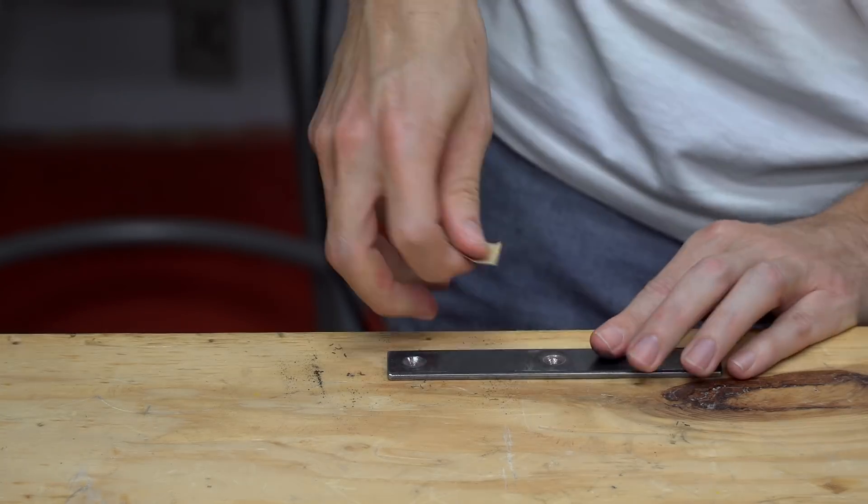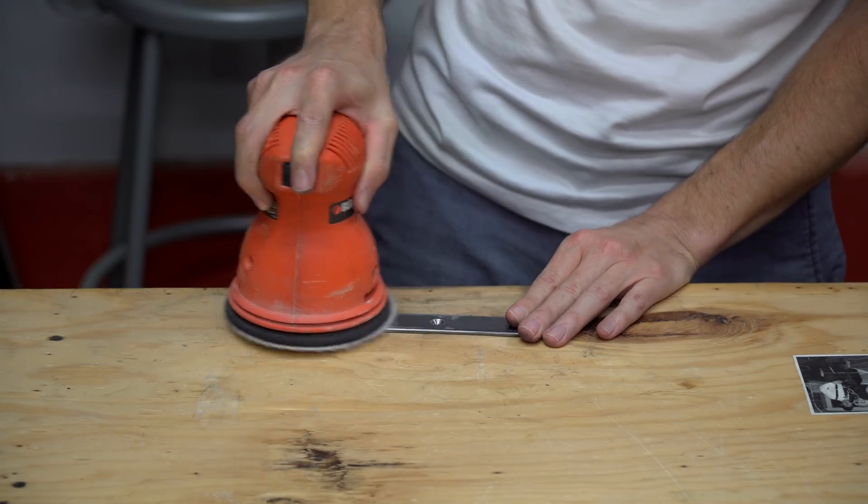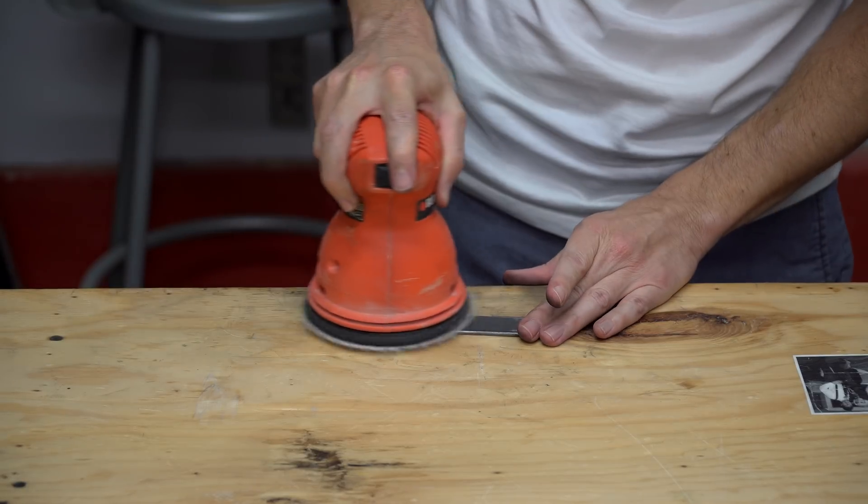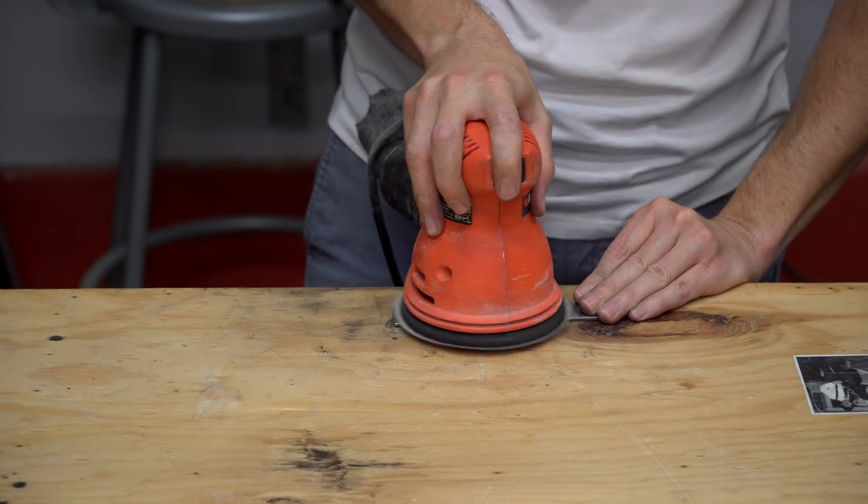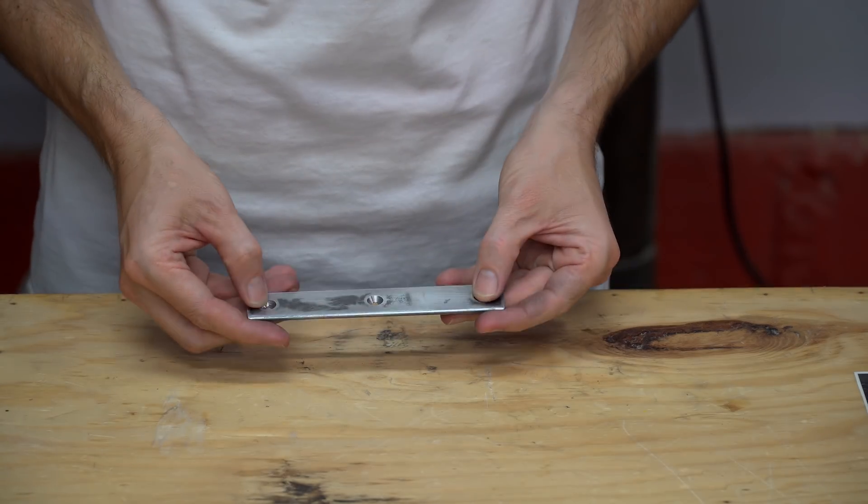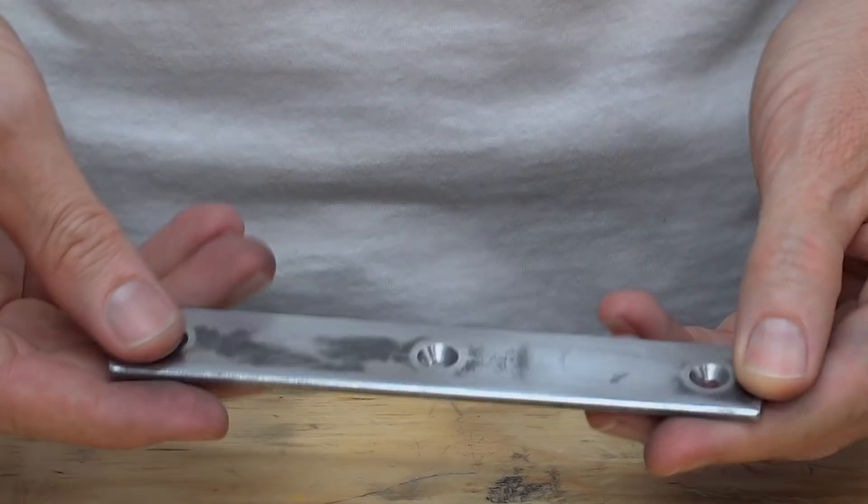I then decided the overall surface could benefit from being smoothed out, and the quickest way to accomplish that was with the orbital sander. It was really starting to feel nice in my hands at this point.